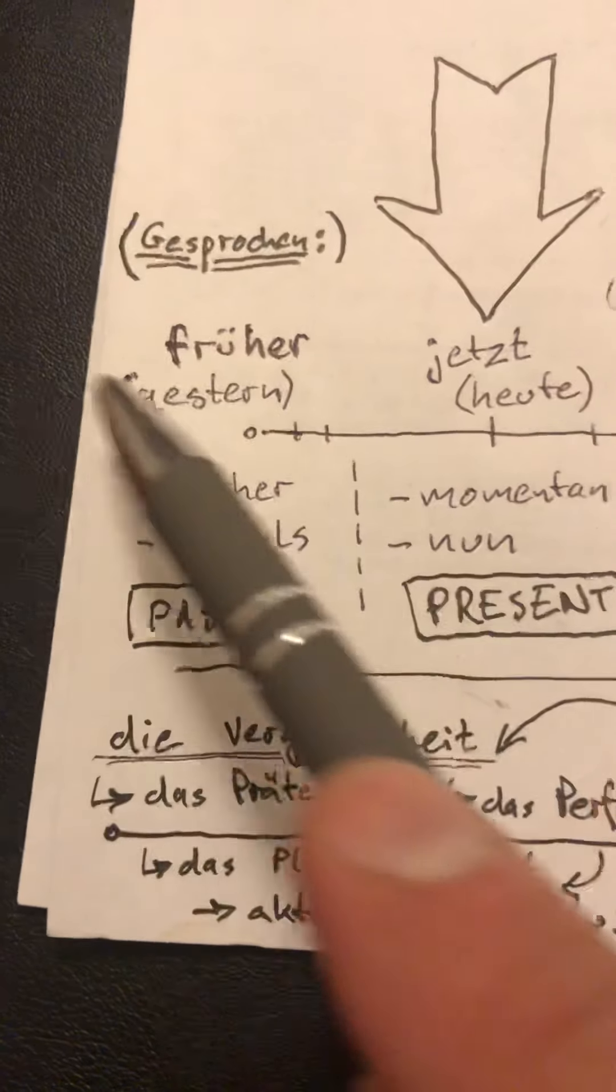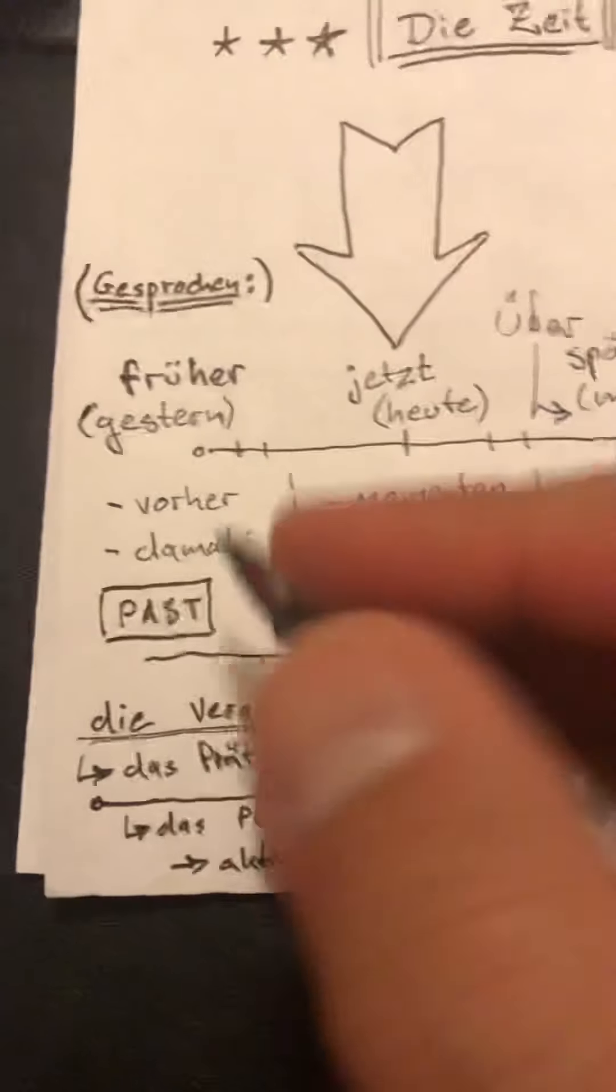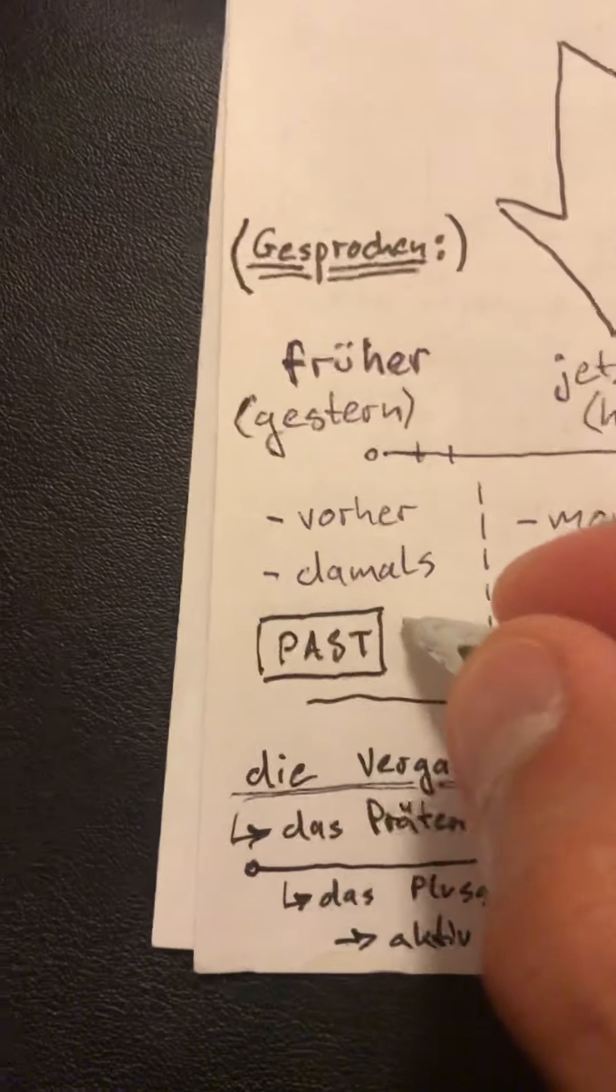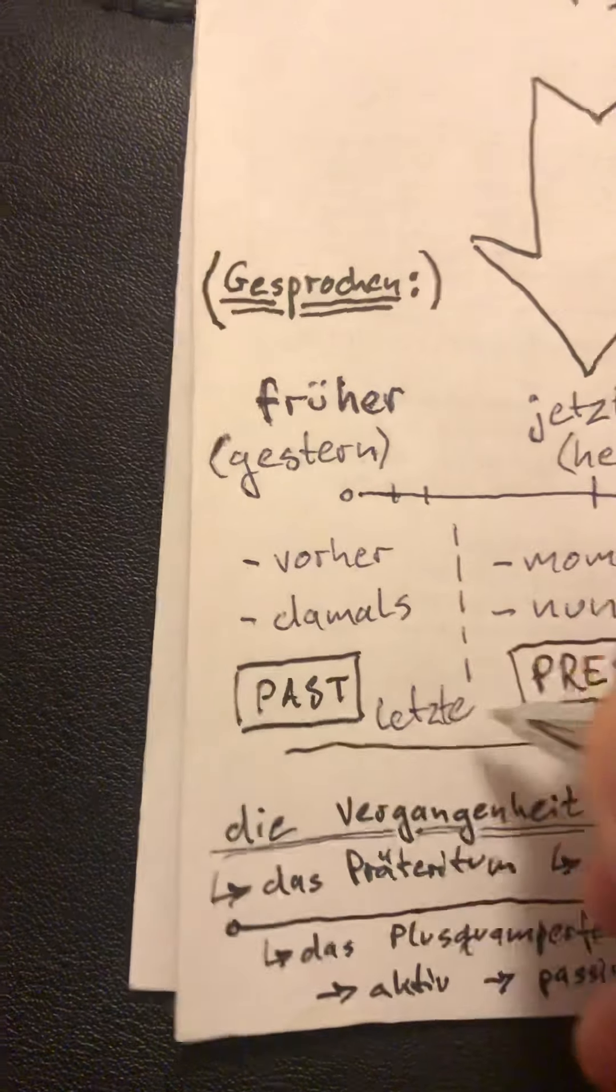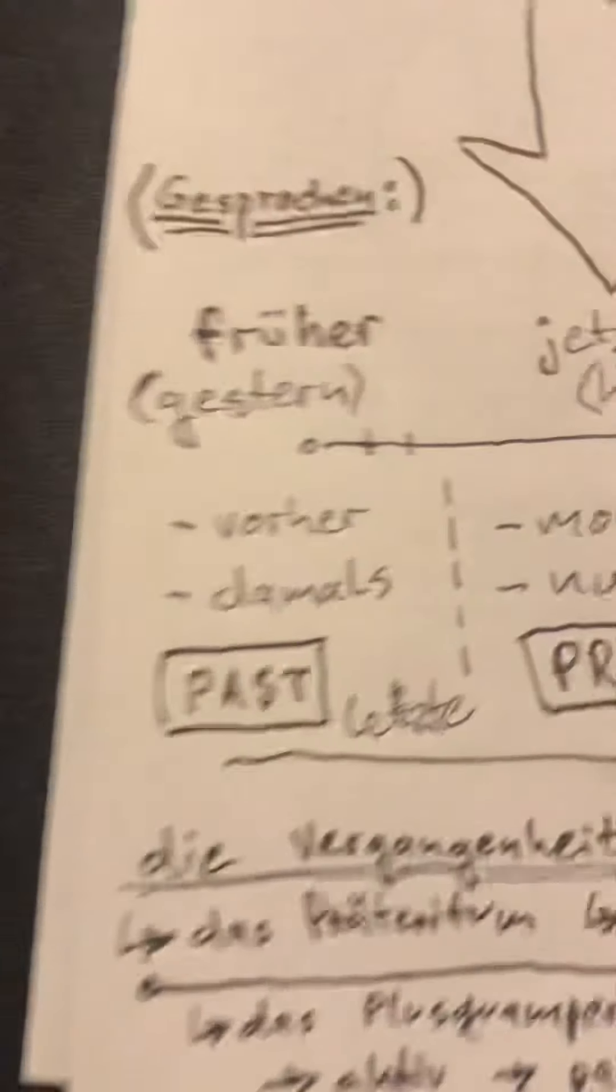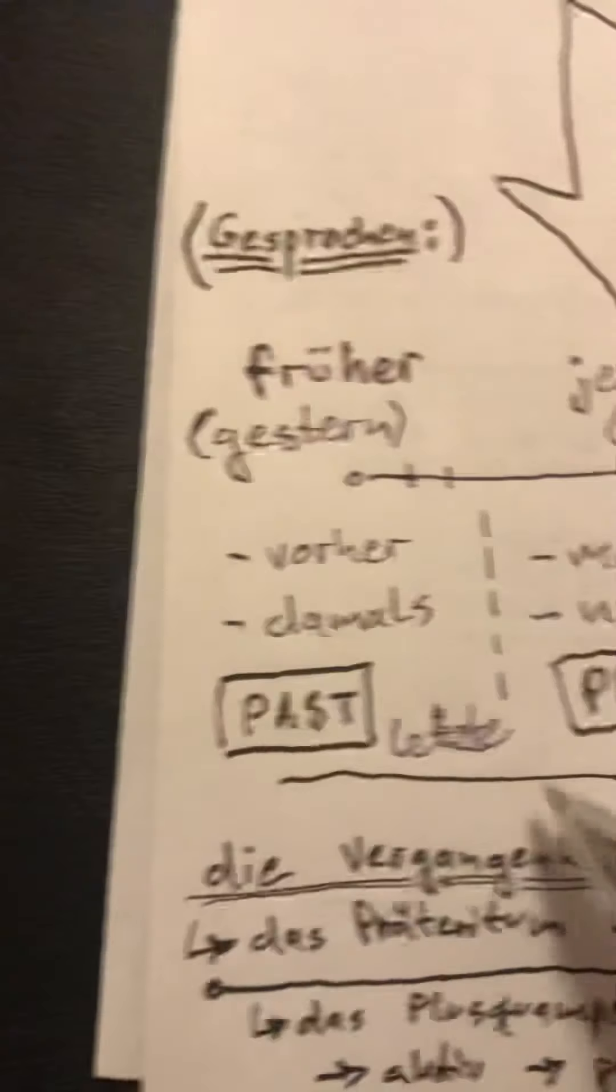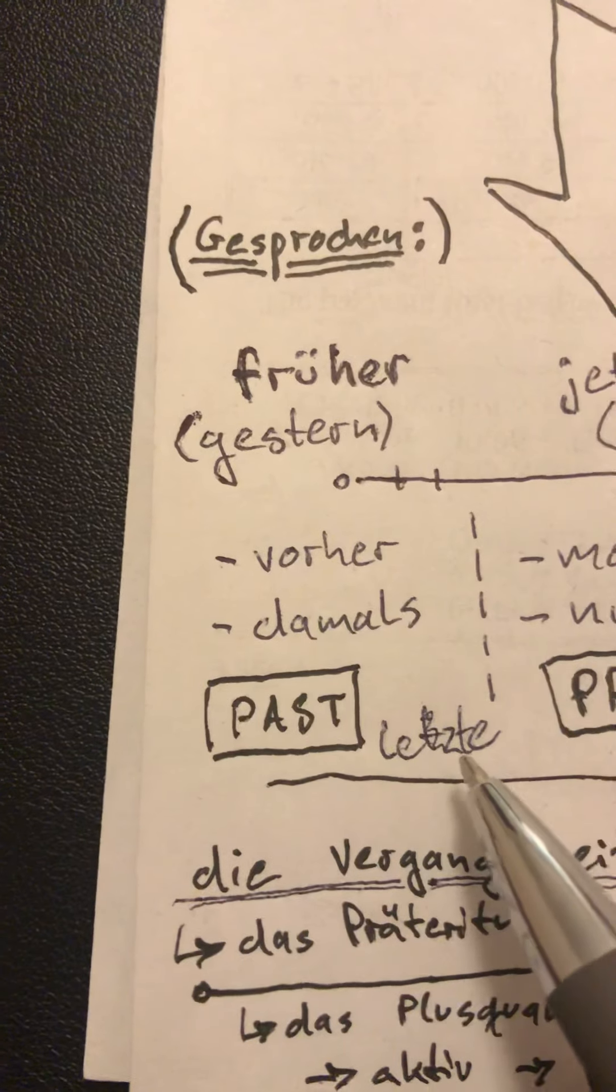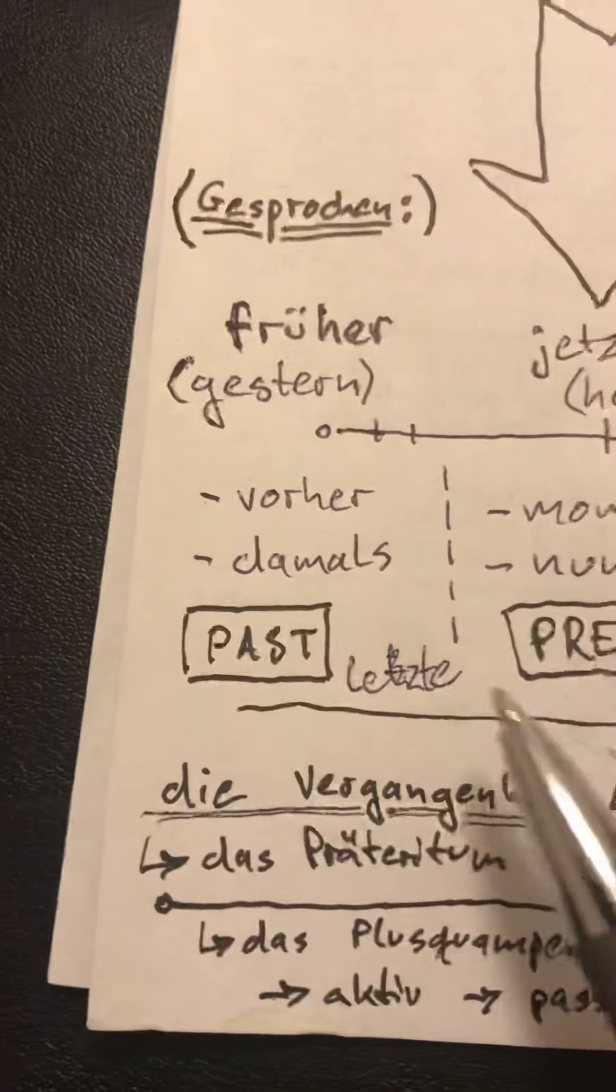Or for, let's do now, we use letzte for past. Let's squeeze this in here. Letzte Woche, nächste Woche. Last week, next week. Der letzte the last, der nächste the next.